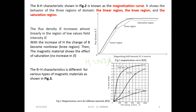When the material starts to be magnetized, B and H no longer vary proportionally — we call this the knee region or non-linear region. Then we increase H but B will not increase anymore, and we call this the saturation region. So flux density B increases almost linearly in the first region, becomes non-linear in the knee region, and then magnetic materials show the effect of saturation.